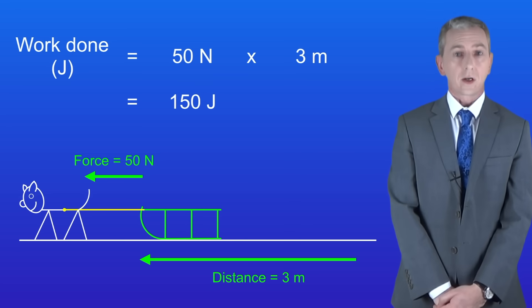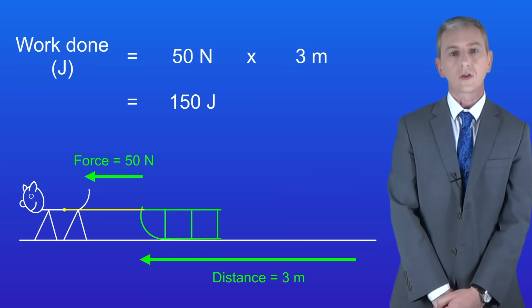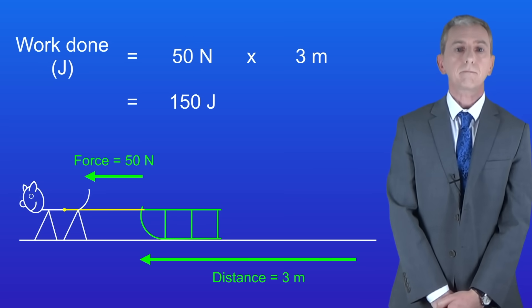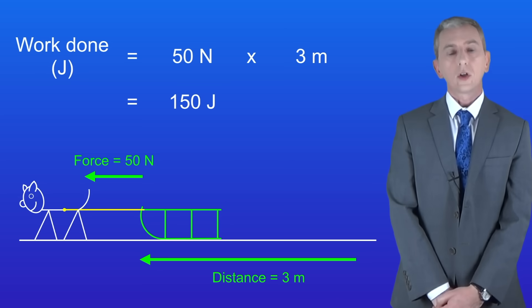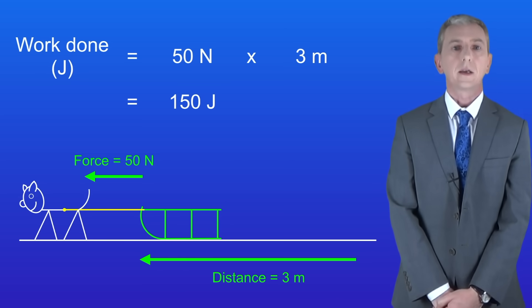This tells us that a total of 150 joules of energy was transferred from the chemical energy store in the dog to the kinetic energy store of the sledge and the thermal energy stores of the sledge runners and of the ground. So can you see that work done is actually a fairly straightforward idea? Let's look at another example.